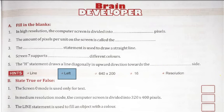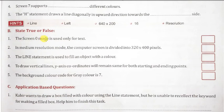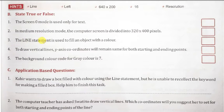True and false: the screen zero mode is used only for text. Absolutely correct, screen zero is only for text. In the medium resolution, the computer screen is divided into 320 into 200 pixels. This is also correct, medium has 320 by 200.